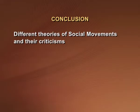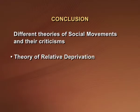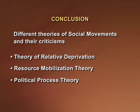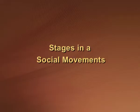Let us summarize what we discussed in this lecture. We discussed the different theories of social movements and their criticisms: the theory of relative deprivation, resource mobilization theory, and political process theory. These theories indicate why social movements occur, how and why they become successful, and what institutional and structural conditions are necessary for social movements to emerge and succeed. In the next part of this chapter, we will discuss the stages in a social movement and a variety of examples. Thank you.